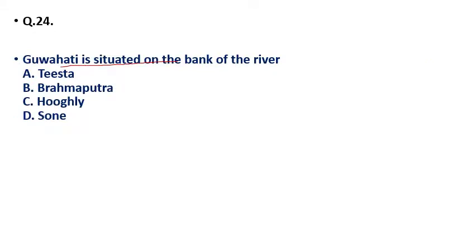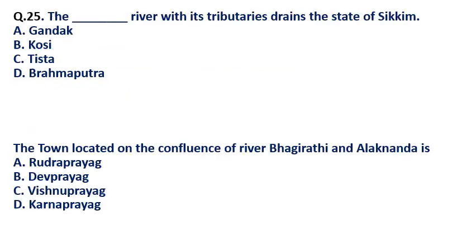Question 24: Guwahati is situated on the bank of which river — (a) Brahmaputra, (b) Hooghly, (c) Son? The correct answer is the Brahmaputra River. Guwahati is situated on the banks of the Brahmaputra.